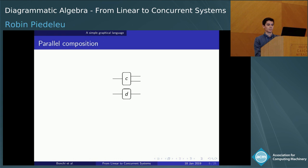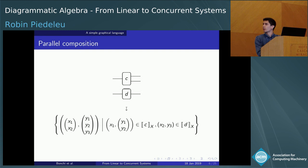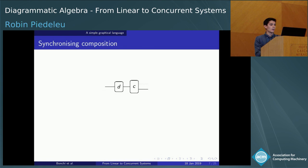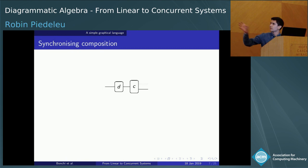We have a lot of additional algebraic structure to play with. Those familiar with this sort of thing might recognize the two compositions of monoidal categories. First, there's the parallel composition, represented as juxtaposing the boxes and wires, interpreted as stacking up the sets of pairs observable at each port. And then there's also what some people call sequential composition, represented by connecting two wires. I prefer calling it synchronizing, because our semantics makes no assumption about the causal flow of information.